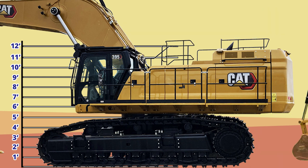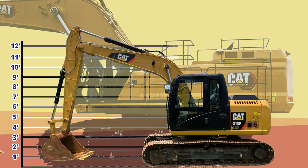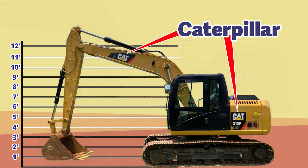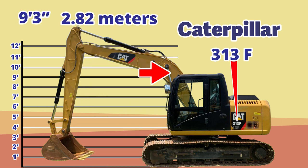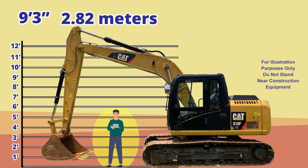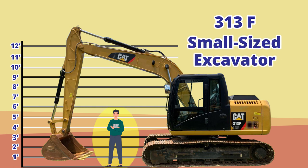This looks like another Caterpillar brand excavator — you can see the CAT logo here. The model number is 313F. We can look up the specifications of this model online. This model number 313F has a cab height of 9 feet 3 inches tall. This is how an average-sized person would look standing next to it. The model number 313 excavator is considered a small-sized excavator.